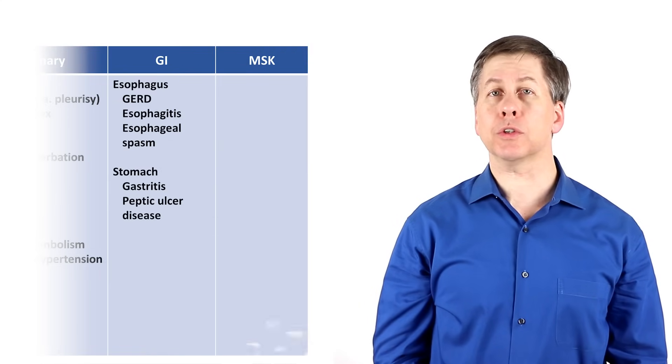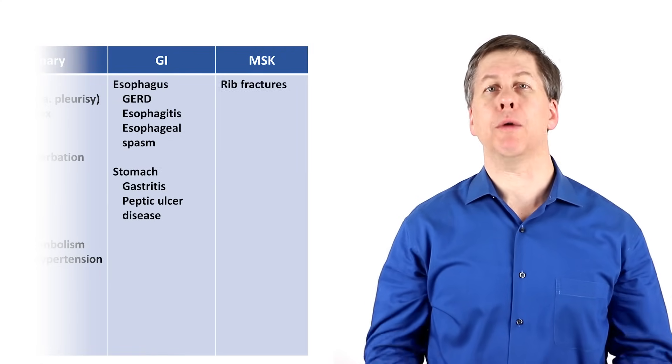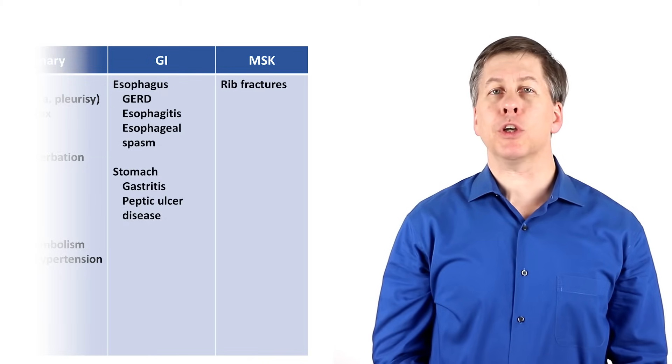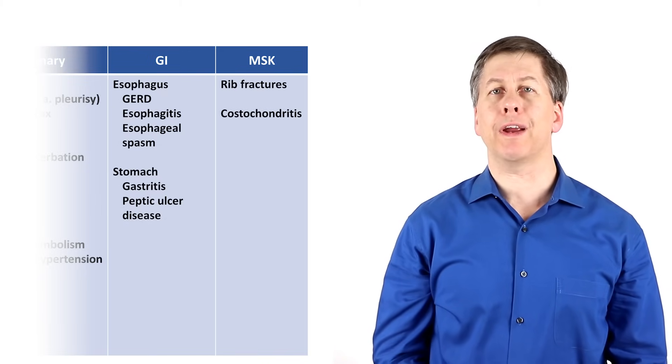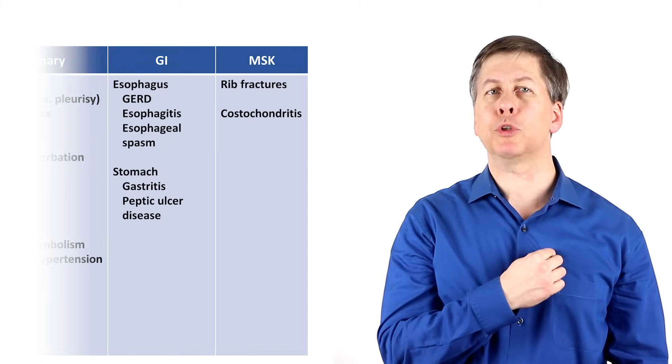With the musculoskeletal system, rib fractures will obviously cause pain, but there is also a condition called costochondritis, which is local inflammation where a rib joins the sternum.